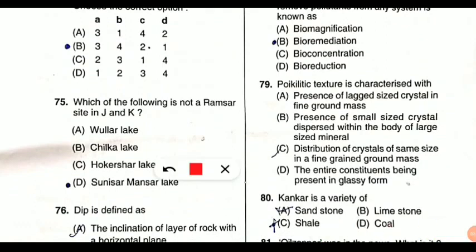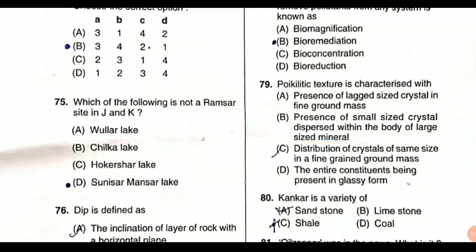Question 79 is about poikilitic texture — what it is characterized by. This comes from environmental geology and some of you may be hearing this term for the first time. Poikilitic texture refers to the distribution of small-size crystals dispersed within the body of a large-size mineral. Option B is correct: when small crystals are present or dispersed in the body of a large-size mineral, it provides the poikilitic texture.